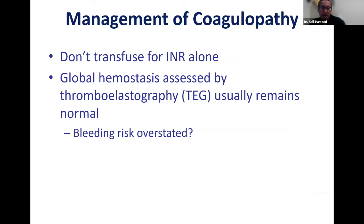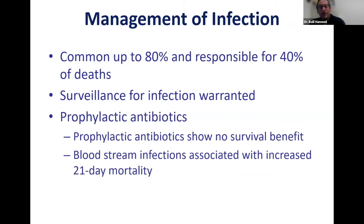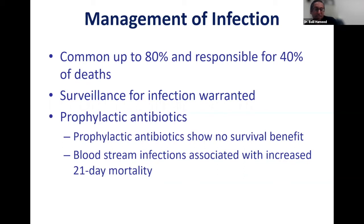Most of these patients have very elevated INR, but we don't transfuse fresh frozen plasma (FFP) just for INR alone — we just monitor. Infections are a very common cause of death — seen up to 80% of patients, causing 40% of deaths. We recommend surveillance cultures. Although prophylactic antibiotics have shown no benefit, if patients develop bloodstream infections, mortality increases significantly. In our centers, we use some antibiotics for high-risk patients, but this varies and is not proven by data.